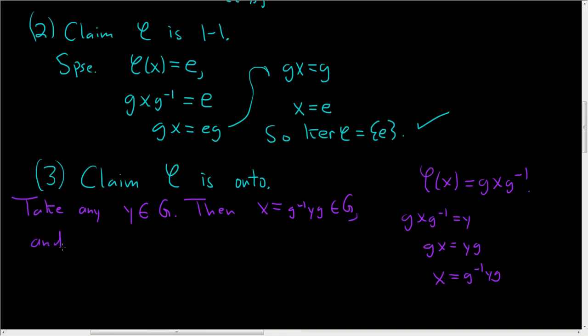And if we look at φ(x), well, that's equal to gxg⁻¹. But x is equal to g⁻¹yg. And then we have the g⁻¹ here. gg⁻¹, that's e. And we have y. And then gg⁻¹, that's e. ey is simply y.